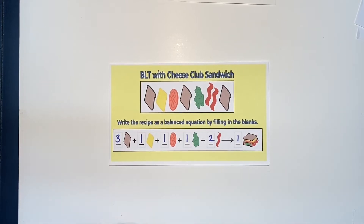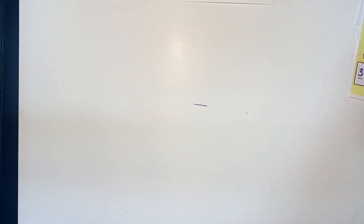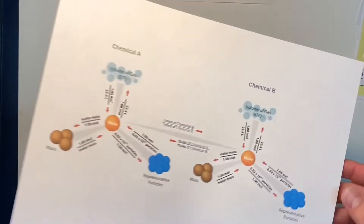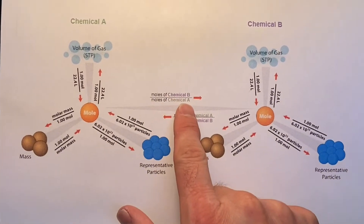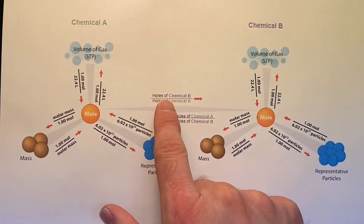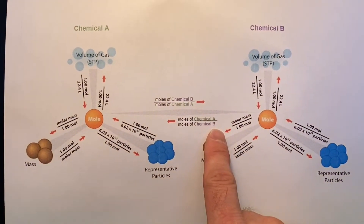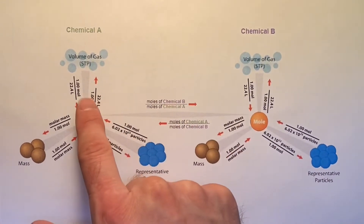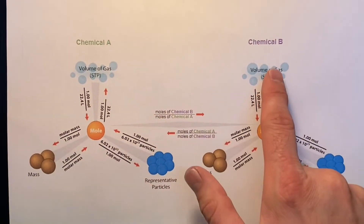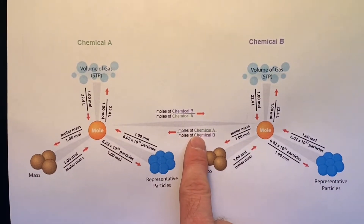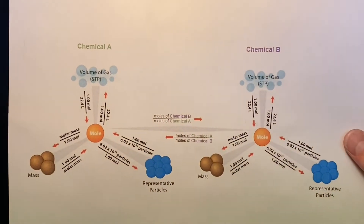Looking at both molar conversion triangles of science together, in the middle we use the mole-to-mole ratio — either moles of chemical B over moles of chemical A, or moles of chemical A over moles of chemical B, depending on which direction you're moving. If you're moving from chemical A to chemical B, use the top ratio; if you're going from chemical B to chemical A, use the bottom ratio.